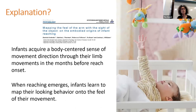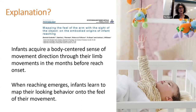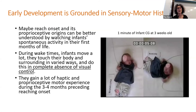Our explanation: infants may acquire this body-centered sense of movement direction through daily movement in the months before reaching — there must be history. They must be doing something before that actually brings them to do this when they start reaching. When reaching emerges, infants learn to map their looking behavior into the field of the movements. But we wanted to understand more about what they do in those weeks and months before they start to reach, so we started going back in time and looking at infants before they begin reaching.